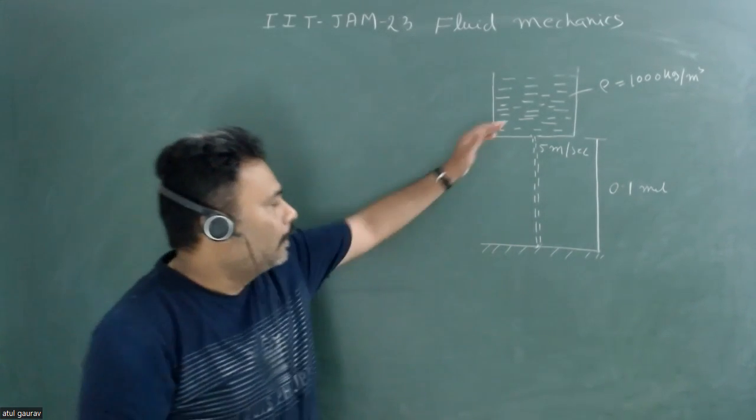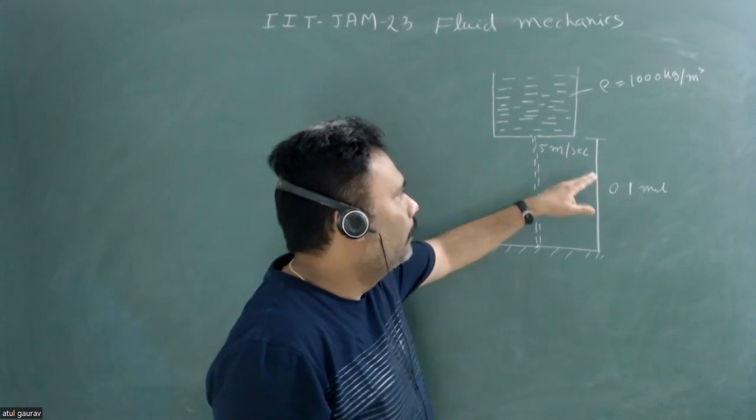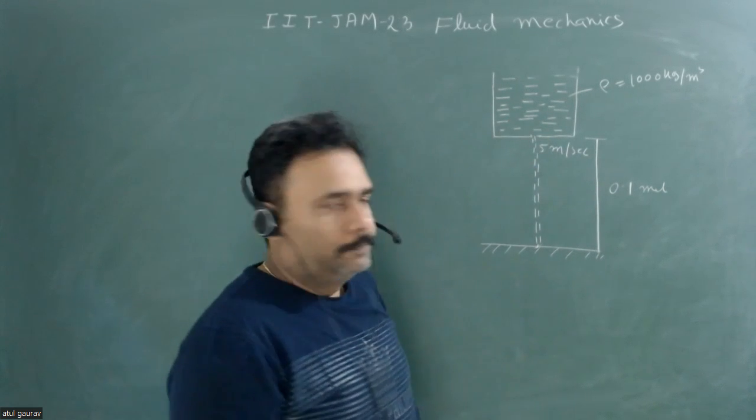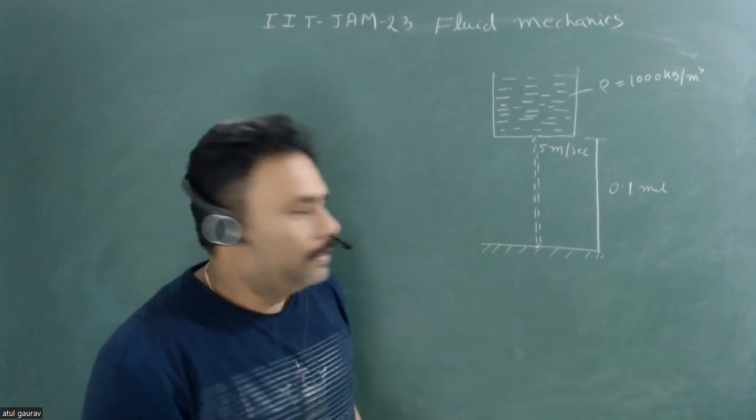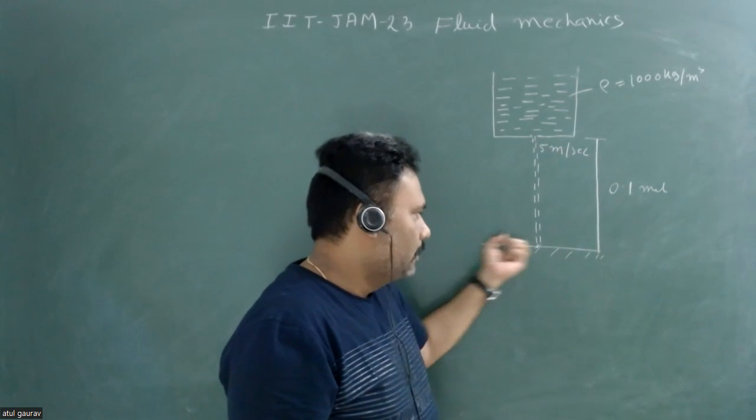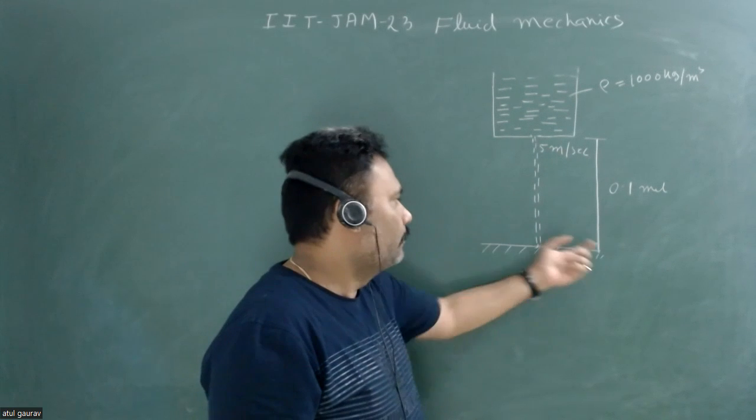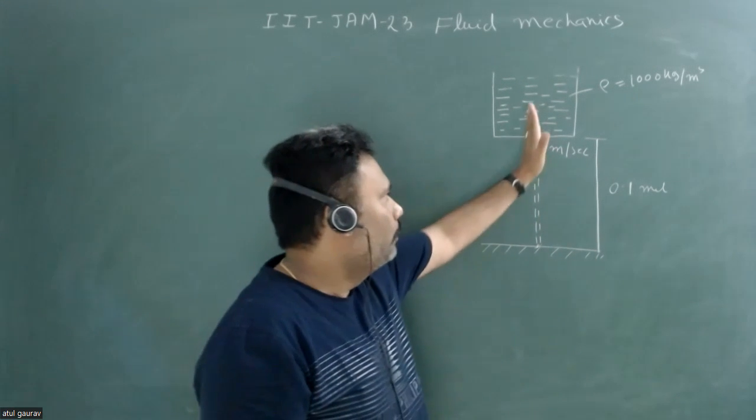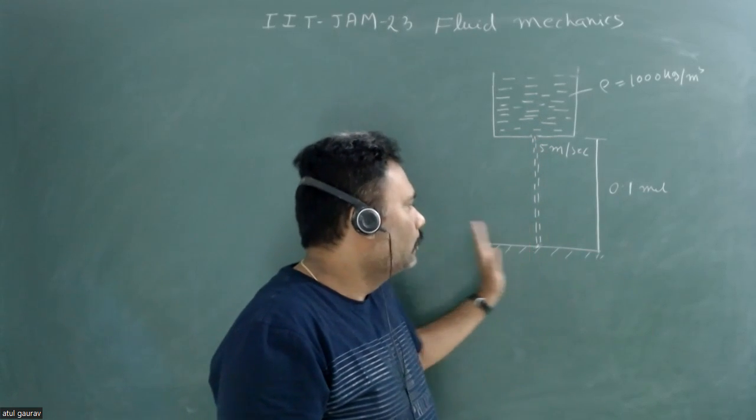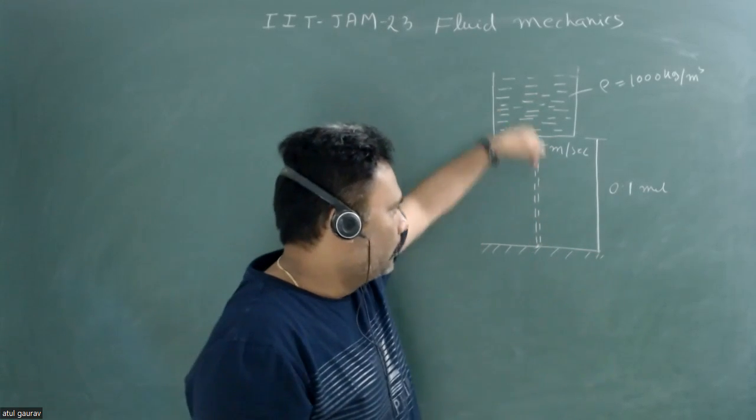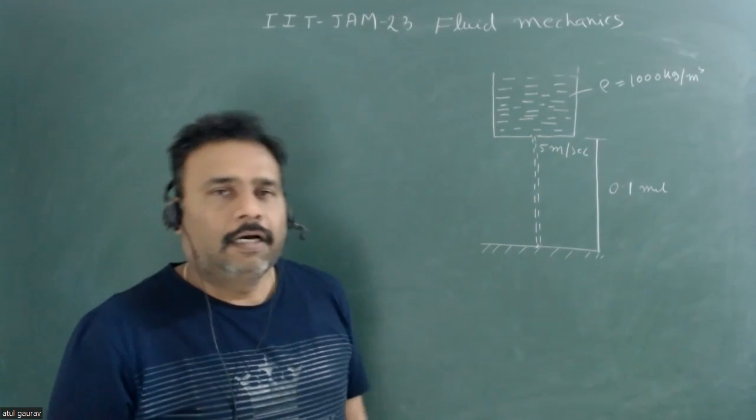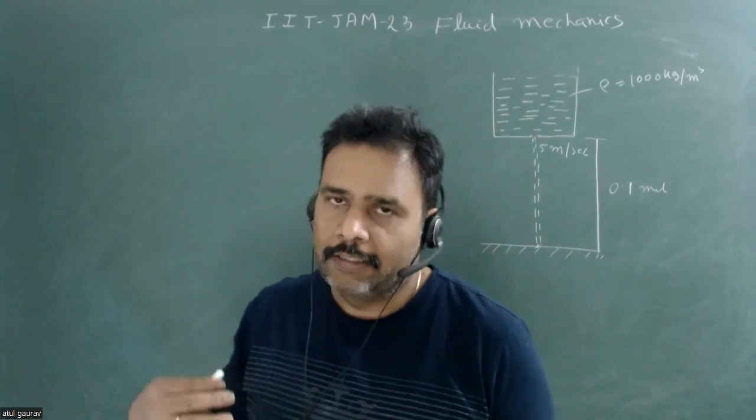From this hole, water is coming out with constant velocity 5 meter per second, coming vertically downward. We have to calculate the pressure exerted by water on the surface. It is also given that when particles come down, they will spread out horizontally.